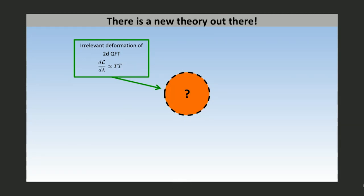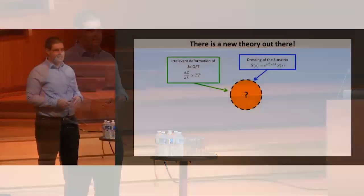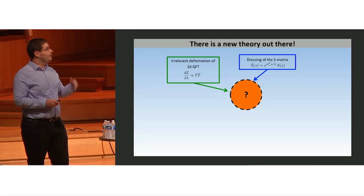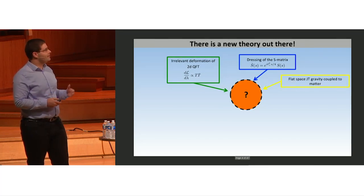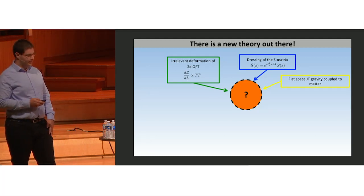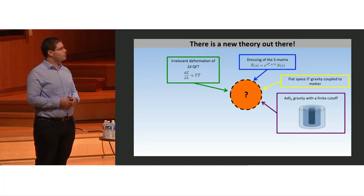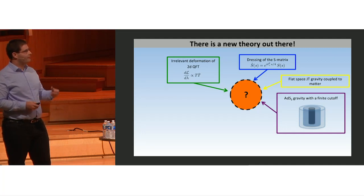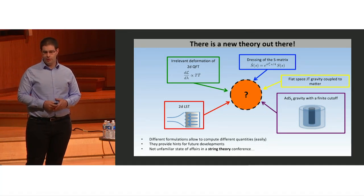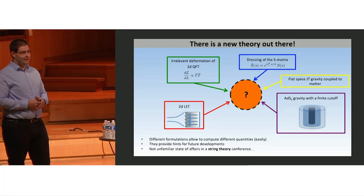There is a new theory out there. It got its name from its description as the irrelevant deformation of two-dimensional QFT by the operator TT-bar, and it also has an equivalent description as dressing of the S-matrix of the starting seed theory by a pure phase, and the closely related description of coupling the seed theory to flat space Jackiw-Teitelboim gravity. Its holographic dual has been proposed to be ADS3 quantum gravity with a finite radial cutoff, and it shares features with two-dimensional little string theory.